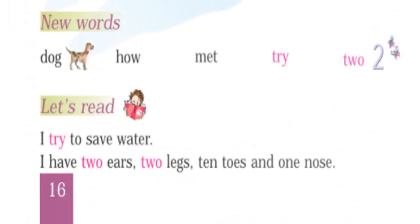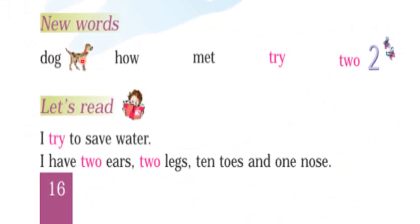Now let's learn new words. D-O-G, dog. H-O-W, how — 'how' is a word we use for asking questions. M-E-T, met. T-R-Y, try. T-W-O, two — we have two eyes, two ears, two hands, and two legs.